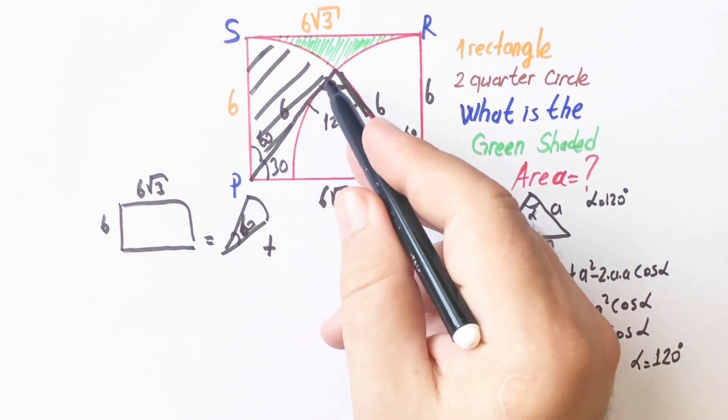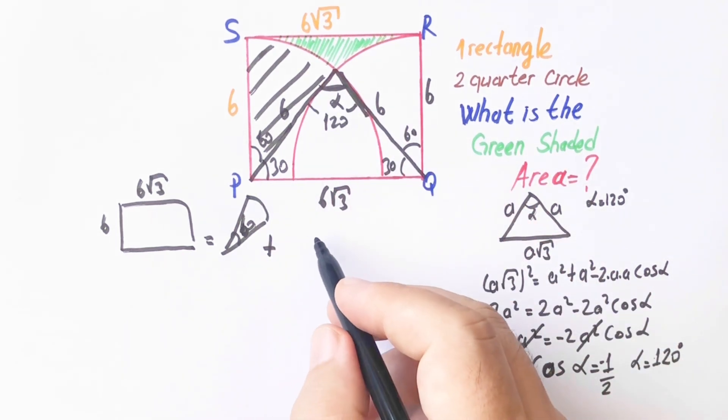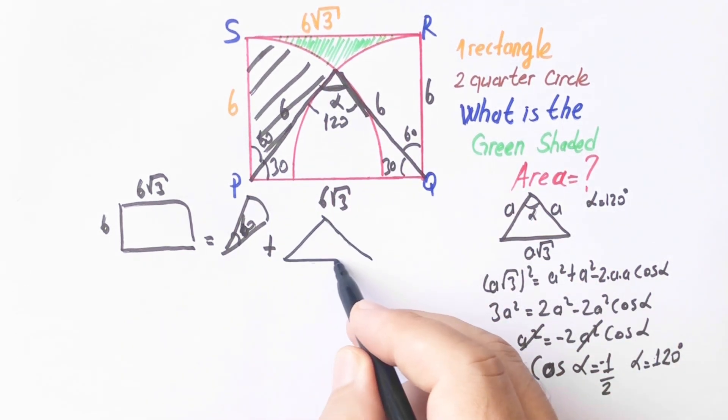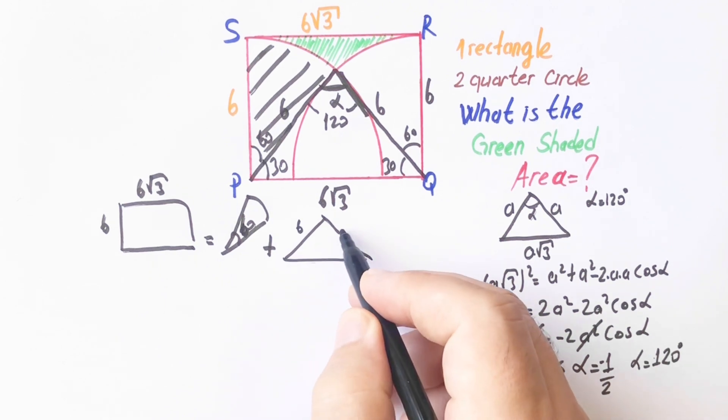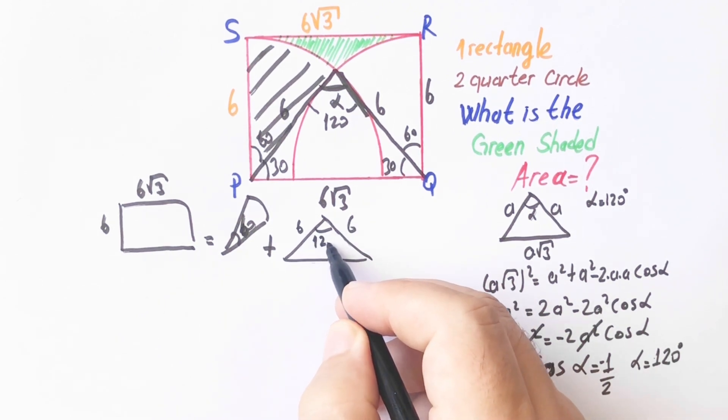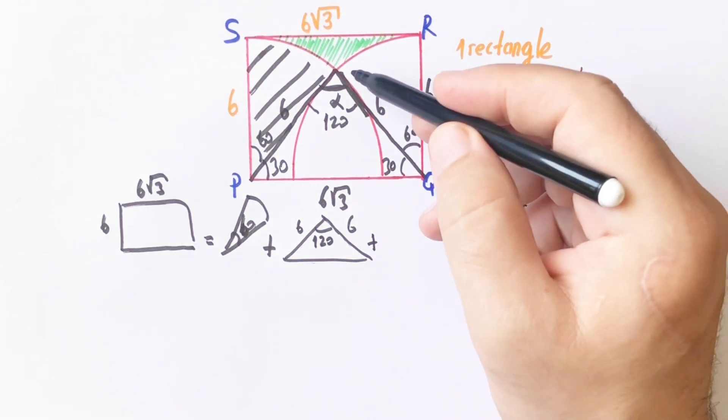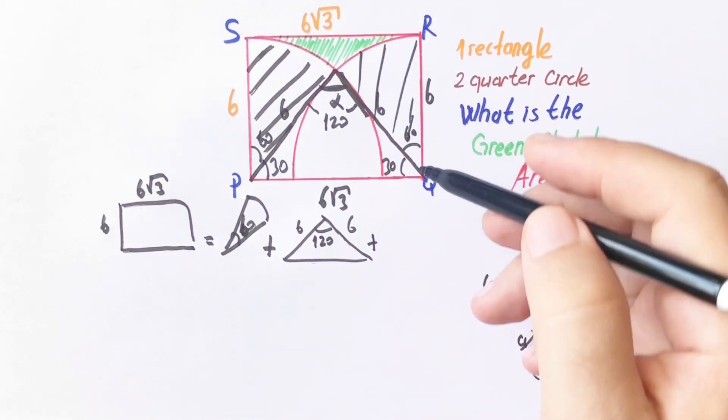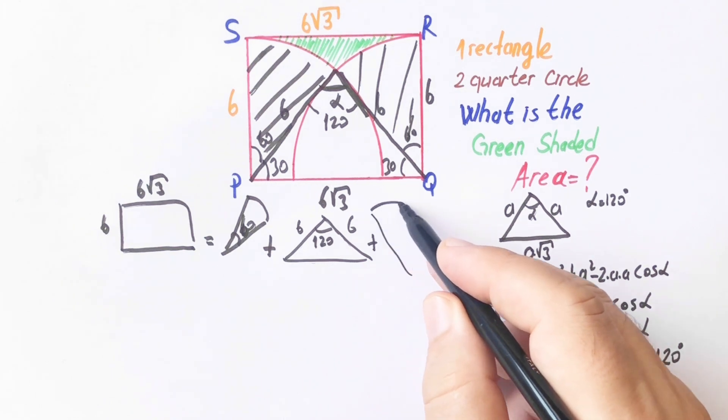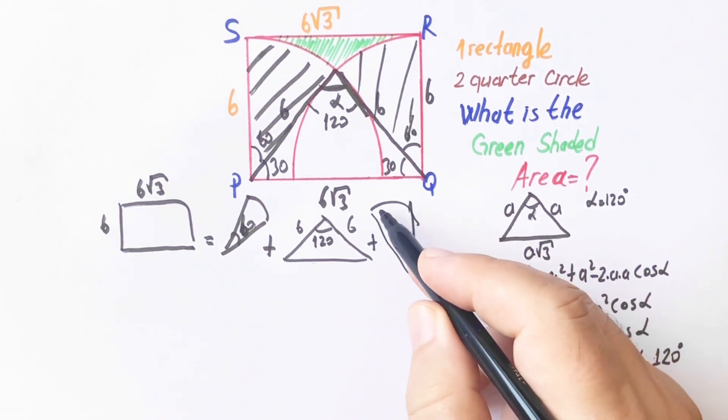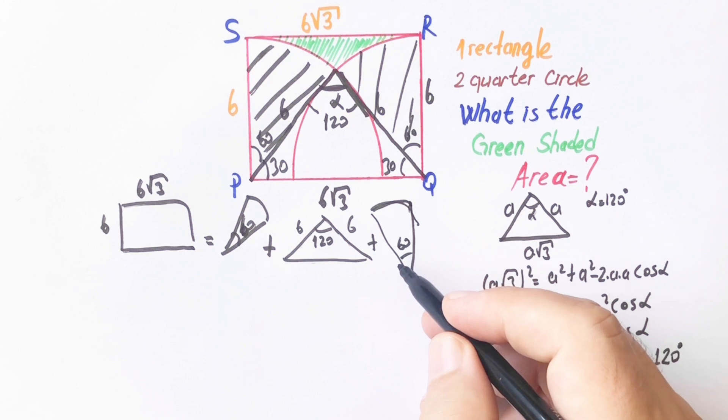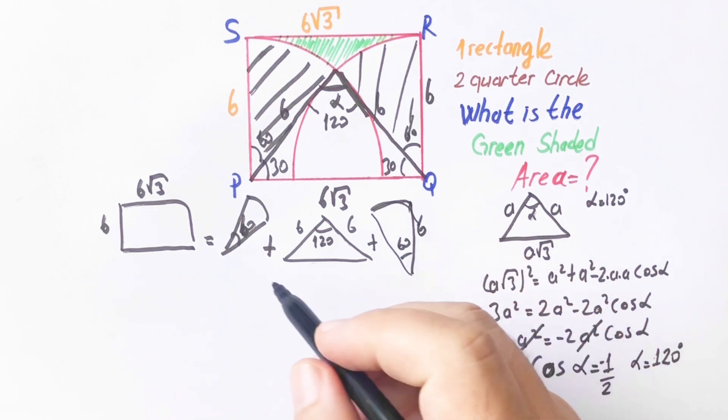And the circle sector and green shaded area, right?